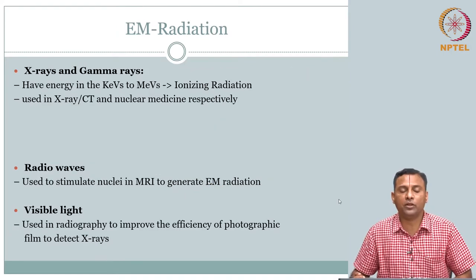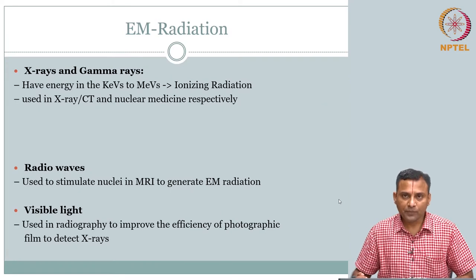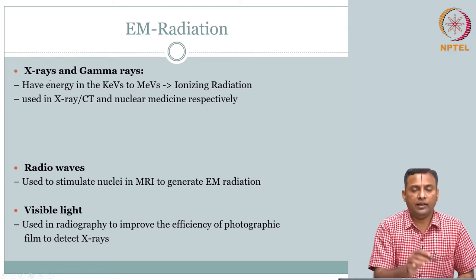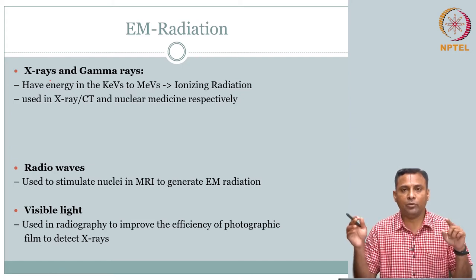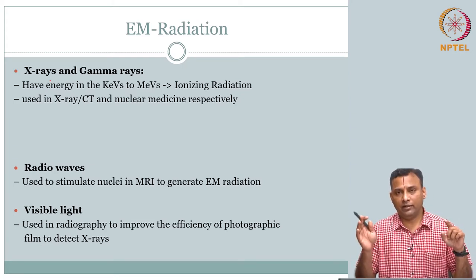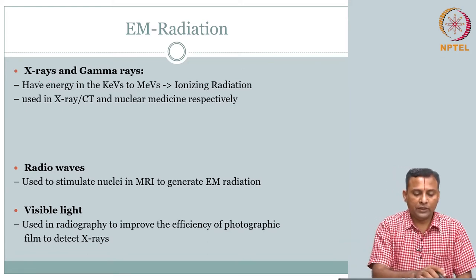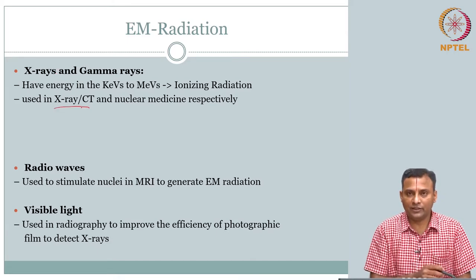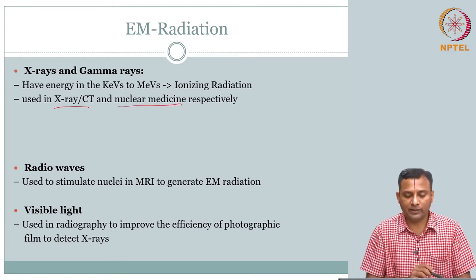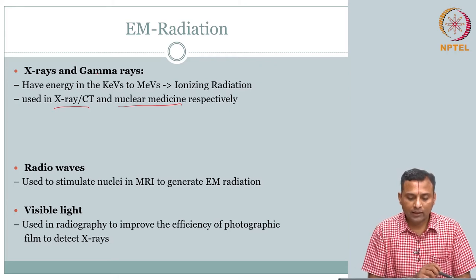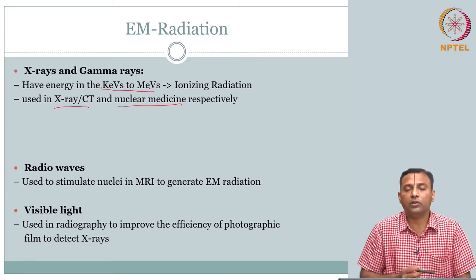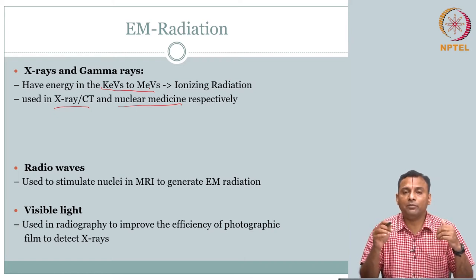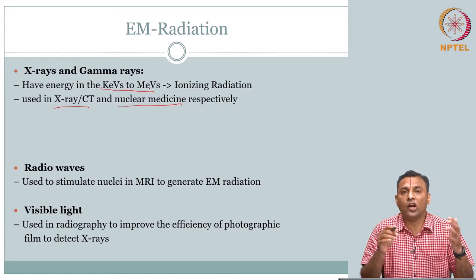Let us look at that one more time before we talk about interactions. X-rays and gamma rays — after visible light, as energy increases, these are exploited in X-ray, CT, and nuclear medicine modalities. These are high energy, in kilo electron volts to mega electron volts, and these are ionizing radiation. That is why we categorize medical imaging systems as ionizing or non-ionizing.